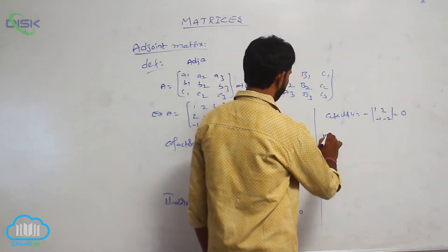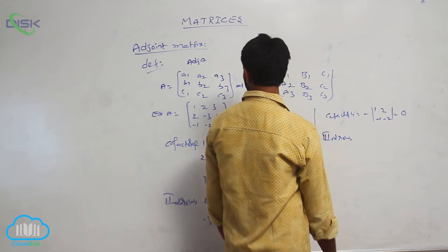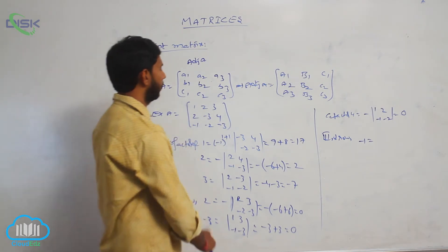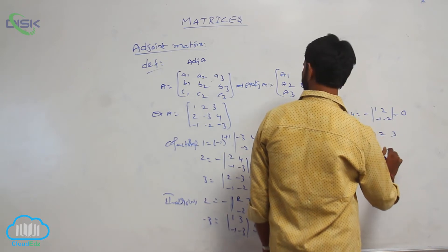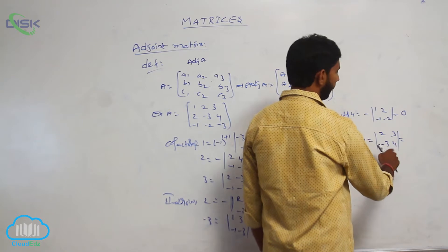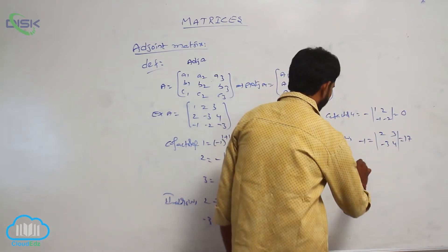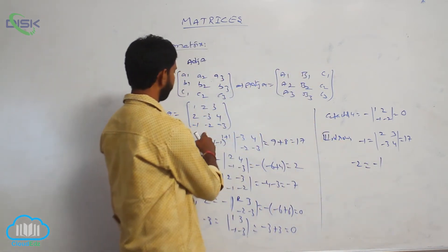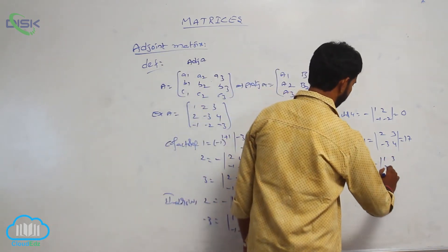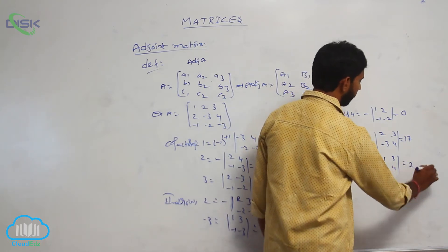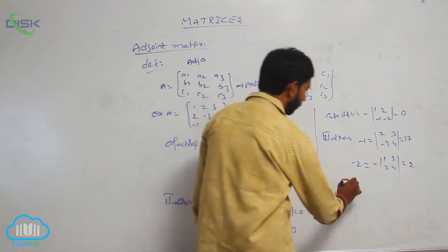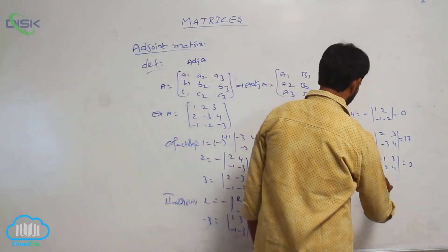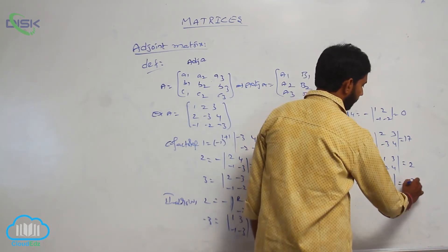Cofactor of minus 1 (third row, first column): eliminate first column and third row, determinant of [2, 3; minus 3, 4] equals 8 plus 9 = 17. Cofactor of minus 2 (third row, second column): minus of determinant of [1, 3; 2, 4] equals minus of (4 minus 6) = plus 2. Cofactor of minus 3 (third row, third column): determinant of [1, 2; 2, minus 3] equals minus 3 minus 4, that is minus 7.